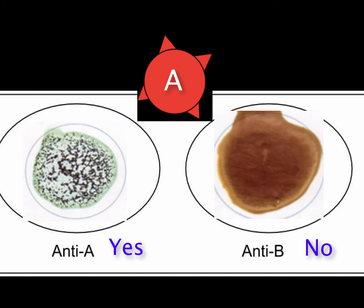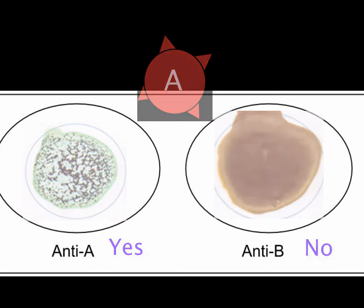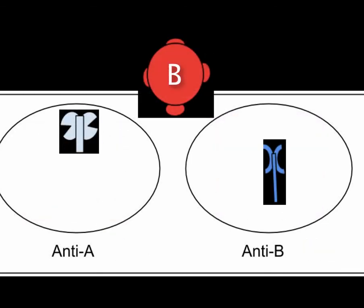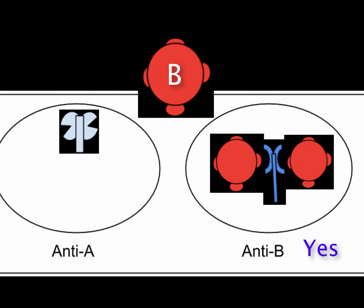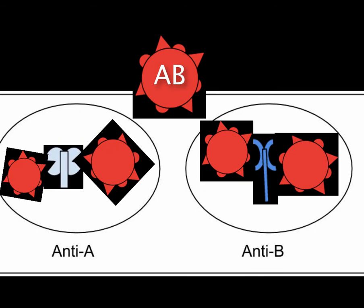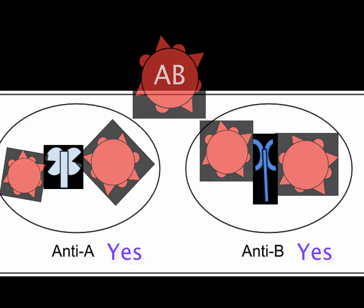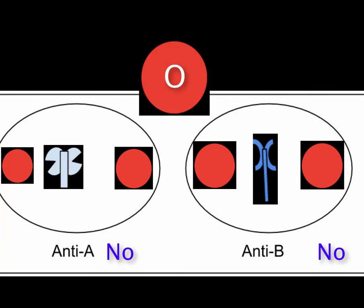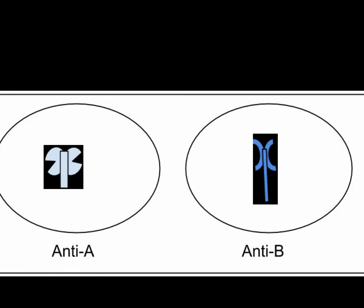For example, if you're A blood type and place your blood in the A antibody well, agglutination occurs — the antibodies clump with your red blood cells. In the B antibody well, nothing happens since those antibodies won't recognize your cells. So A blood type shows clumping in A, but not B. For B blood type, you get agglutination in B but not A. AB blood type shows agglutination in both wells. O blood type shows no agglutination in either well. That's how blood type is determined using this antibody technique.